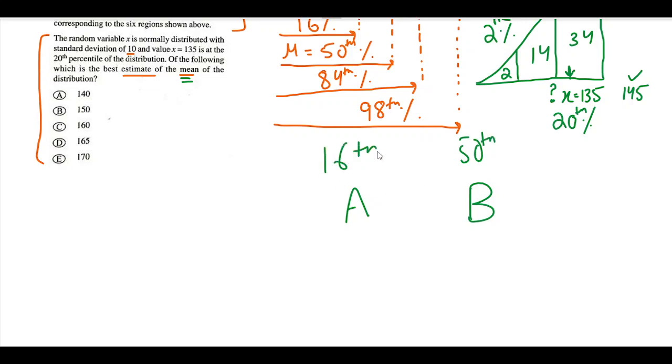This is A, this is B, this is the 50th percentile, this is the 16th percentile. The distance, the gap between them is 10. So if the value at 20th percentile is somewhere over here, a little right to the 16, and it is 135, if I add 10 to 135 I'm gonna get 145. But the problem is that 145 is bigger than the mean because mean is at B.